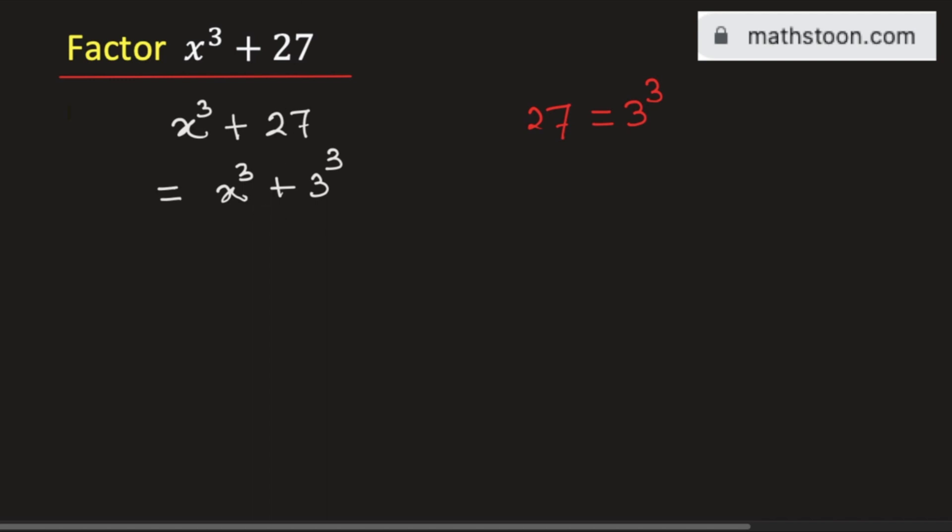See that it is in the form of a cube plus b cube. So we can apply the formula of a cube plus b cube which is equal to a plus b times a square minus ab plus b square.